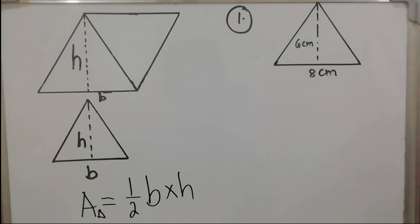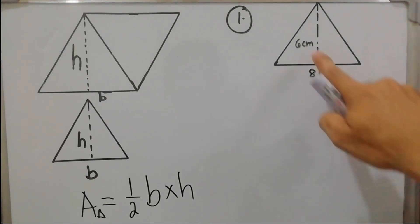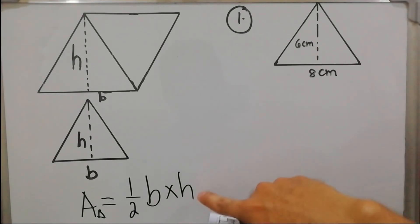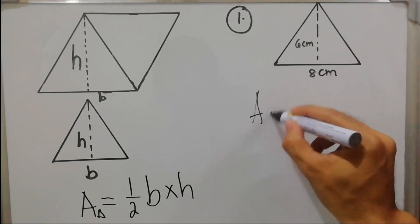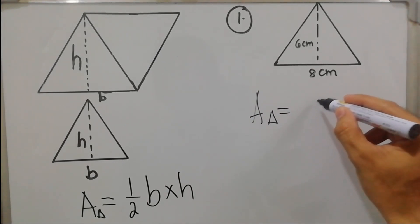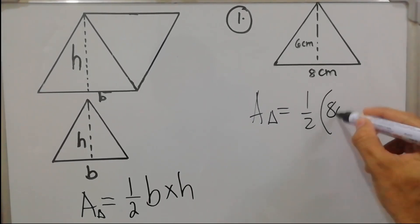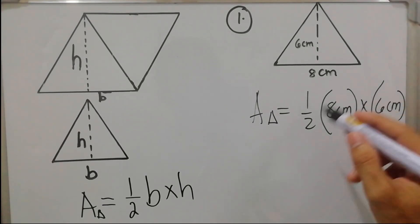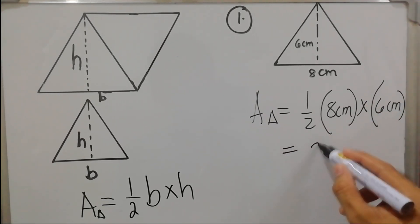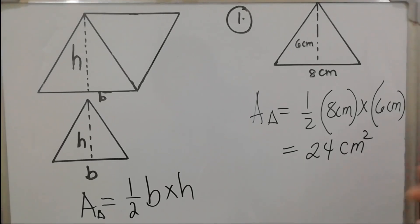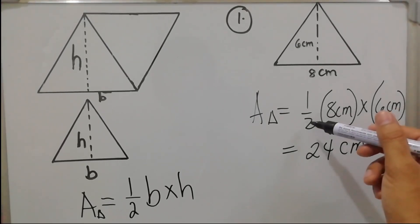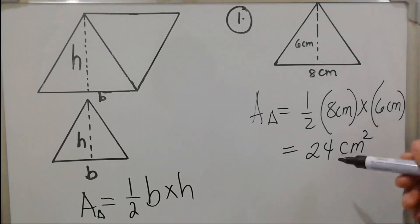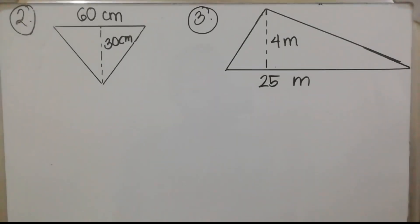For example number one, we have a base of 8 centimeters and a height of 6 centimeters. Using the formula one half base times height: area = one half × 8 cm × 6 cm. Eight times six is 48, divided by two equals 24 square centimeters. You can also divide first: 8 ÷ 2 = 4, then 4 × 6 = 24.